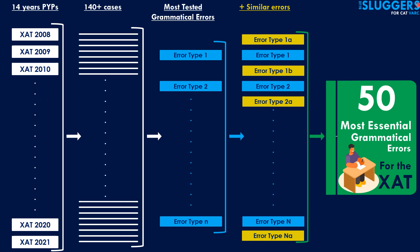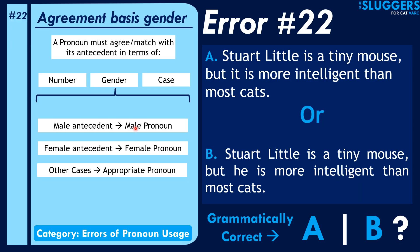In this installment, we'll discuss the second parameter of agreement between the pronoun and its antecedent. Last time we discussed the number parameter; the second parameter is that of gender. This basically means that if you have an antecedent that is male in nature, you need to use the appropriate male pronoun — like he, him, his, etc.